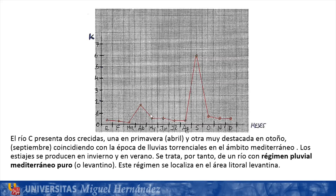River C presents two floods: a more modest one in spring in April, and a very prominent one in autumn in September, coinciding with the season of torrential rains in the Mediterranean area. Low-water periods occur in winter and in summer. It is therefore a river with a pure Mediterranean pluvial regime, or Mediterranean Levantine regime. This regime is located in the Levantine coastal area.